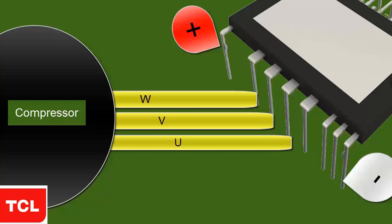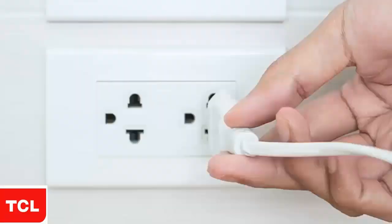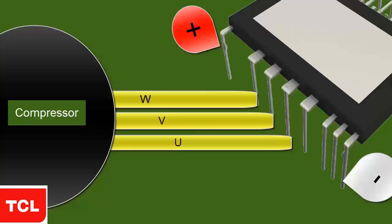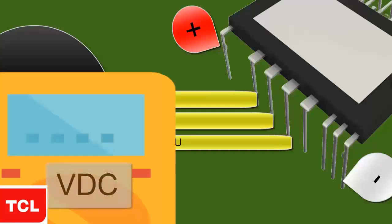Connect the electronic board to the power supply, taking the necessary precautions. Set the multimeter to the DC voltage scale at 400 volts.